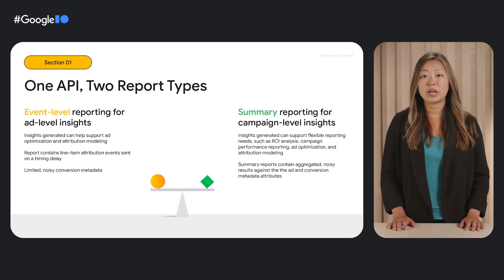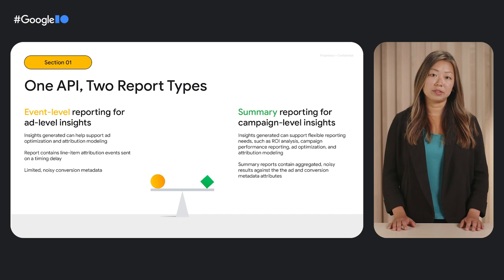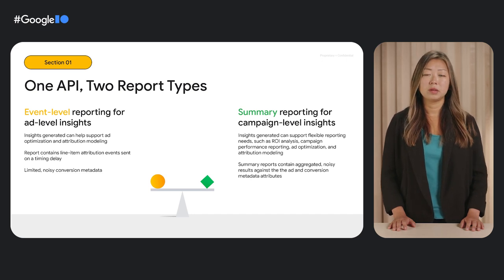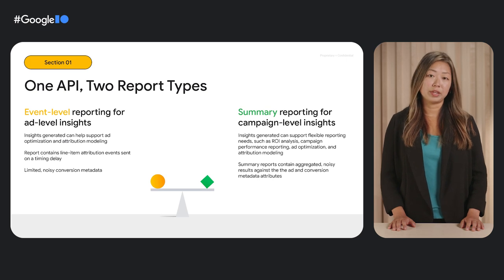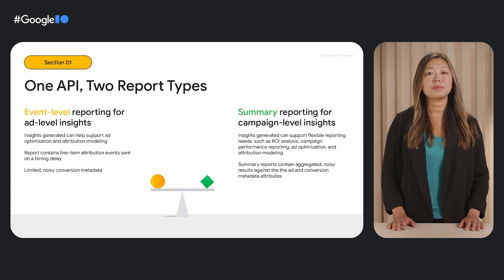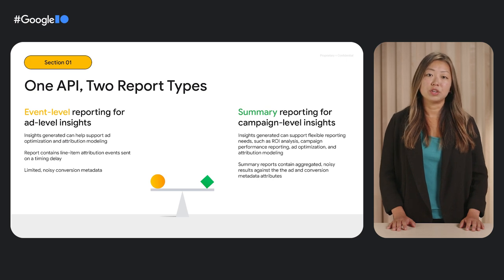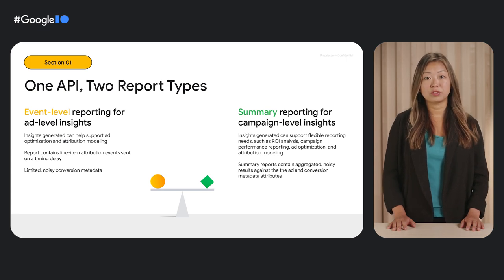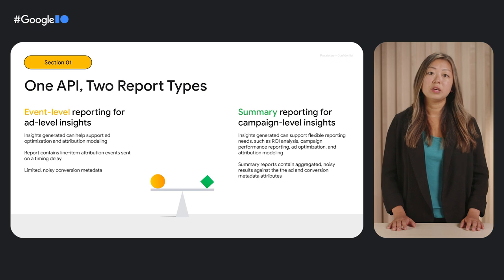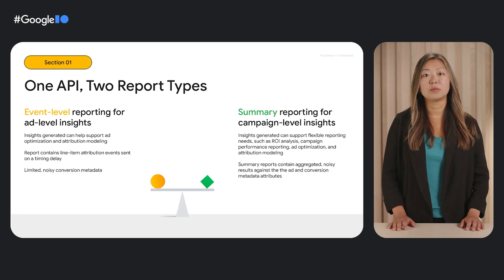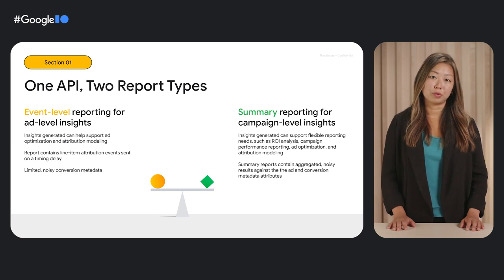Summary reporting, on the other hand, will likely be used for higher level insights like ROI analysis or campaign performance reporting. Summary reports support more flexible reporting needs and conversion data, such as purchase value, but in an aggregated report. Ad techs have flexibility on what reporting dimensions they want to include on both the ad event and the conversion, and then summary values for each set of dimensions is added to the report. For example, the ad tech could use summary reports to understand the total number of conversions and revenue associated with a specific ad campaign. The more granular dimensions the ad tech sets, the more impact applied noise will have on the summary report.